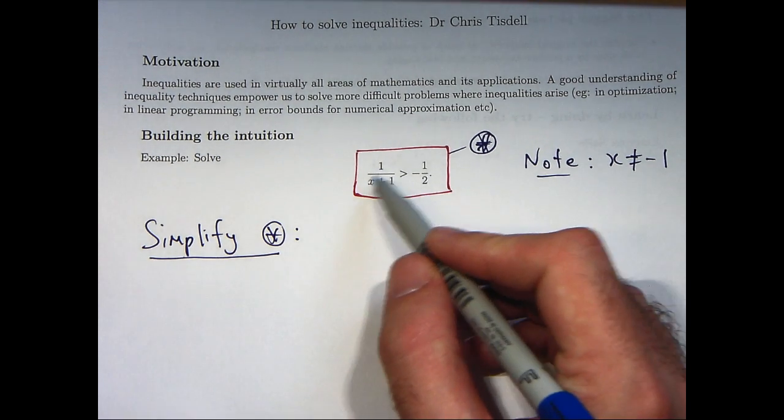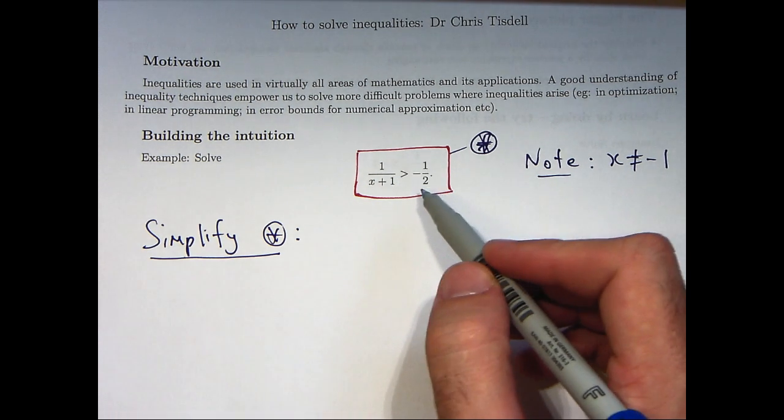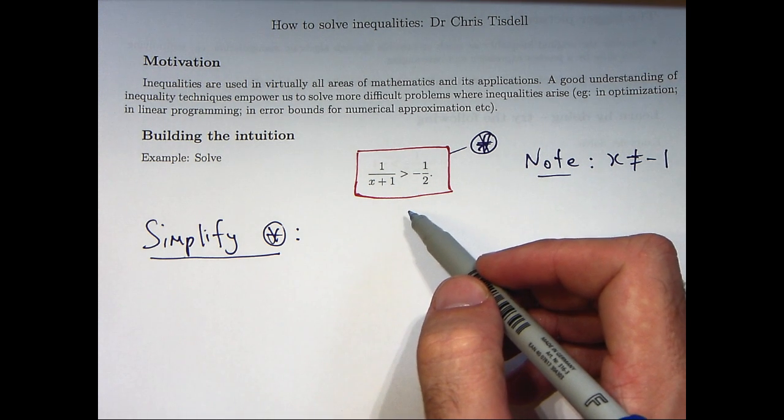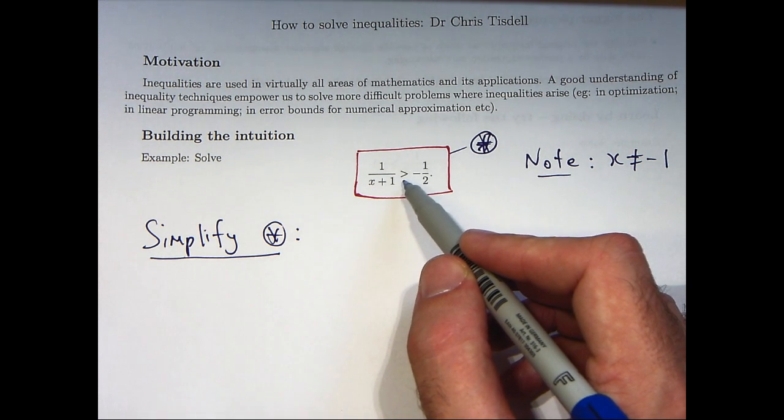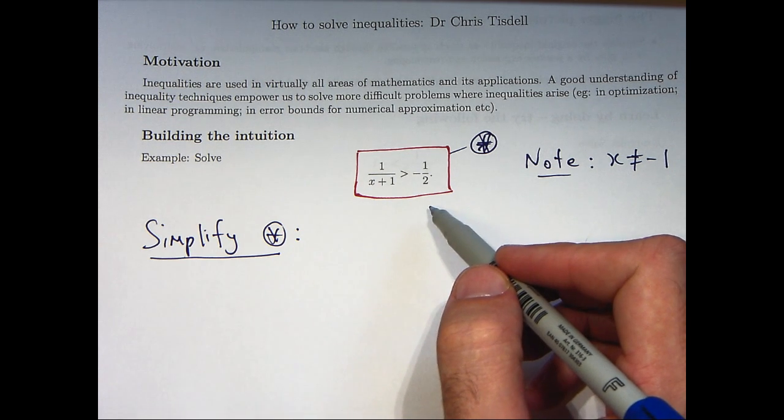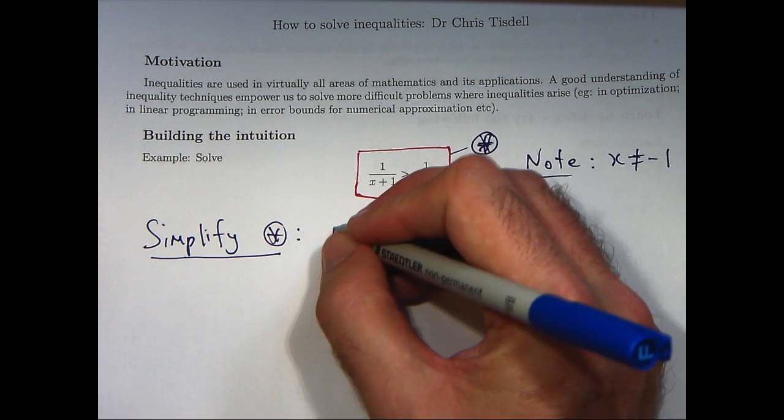So, to do that we would like to get rid of that x plus 1. The temptation here is to multiply both sides by x plus 1. But that's fraught with danger because x plus 1 is sometimes positive and sometimes negative. And then you would have to worry about the inequality sign. So, what we're going to do is multiply both sides by a positive expression. That way we can keep the existing inequality sign.